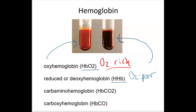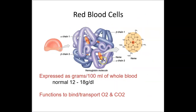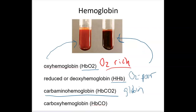CO2 is also transported on hemoglobin. This is called carbaminohemoglobin, written HbCO2. Importantly, the heme transports the oxygen, while it's the globin — the protein — that transports the CO2. So they're carried on different parts of the molecule: the heme discs are responsible for O2 transport, and the globin backbone transports CO2.